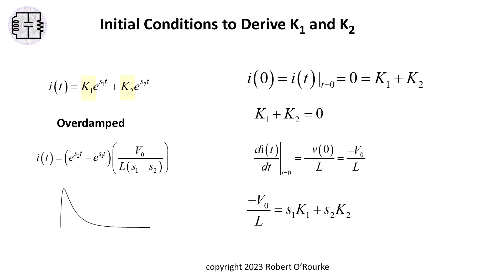The value of the current function at time 0 and the value of the derivative of the current function at time 0. Here are some initial condition expressions for the overdamped case.